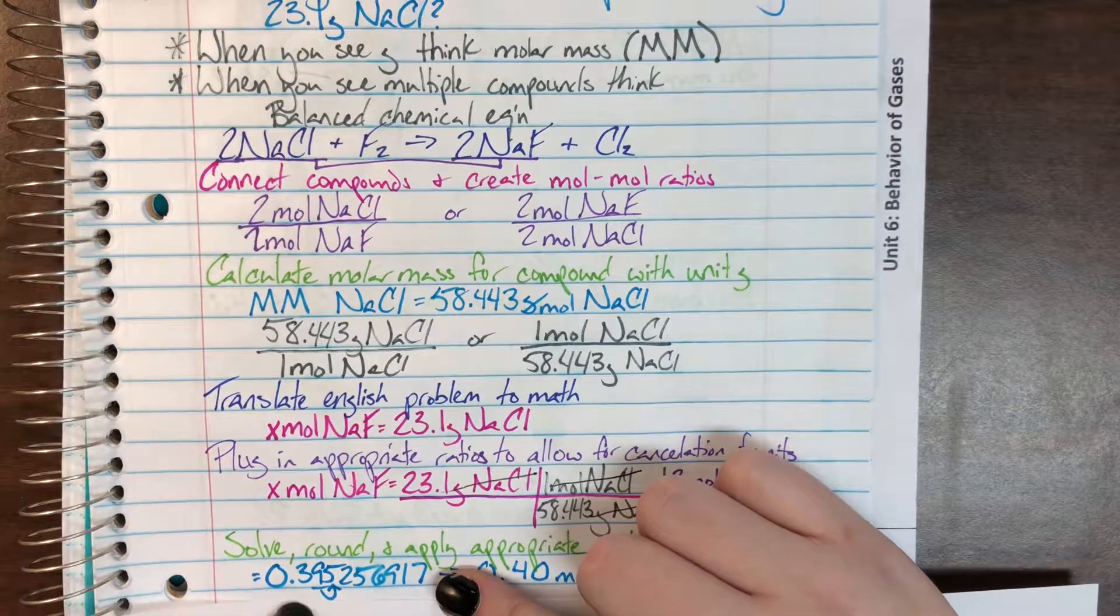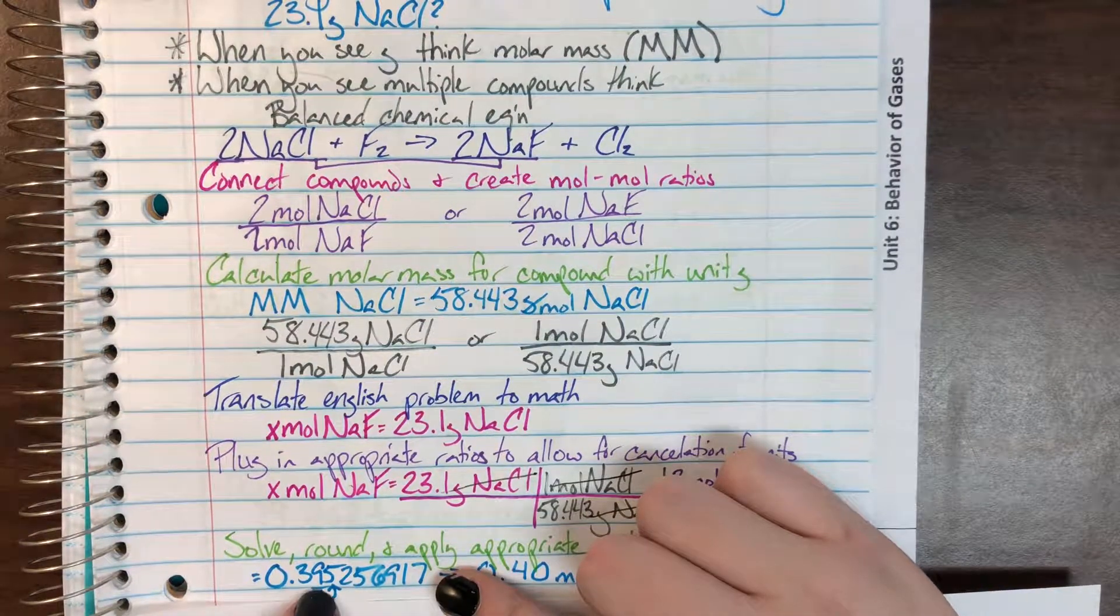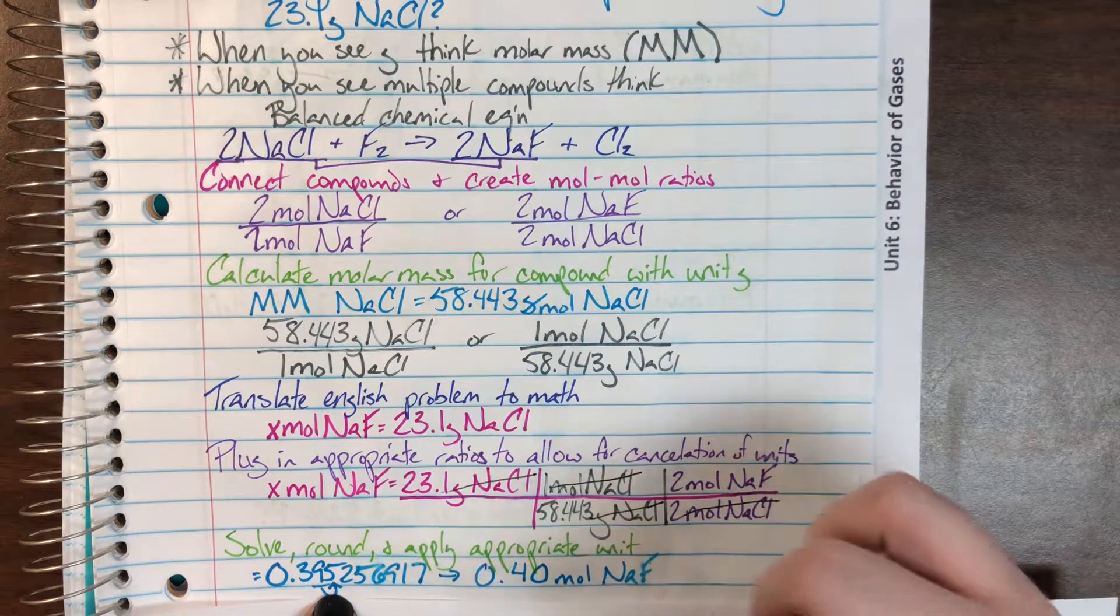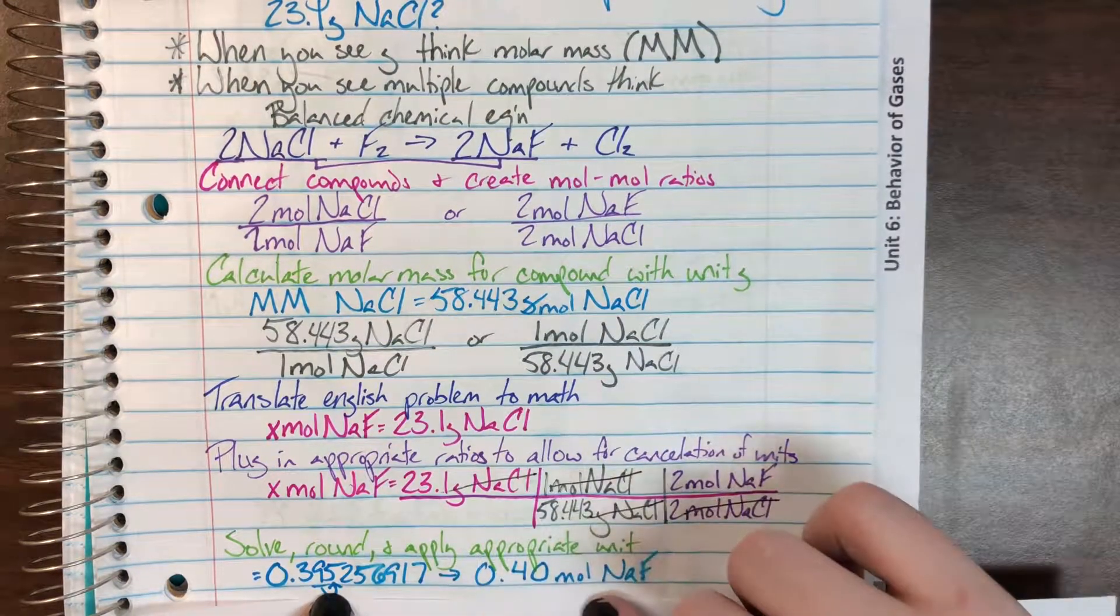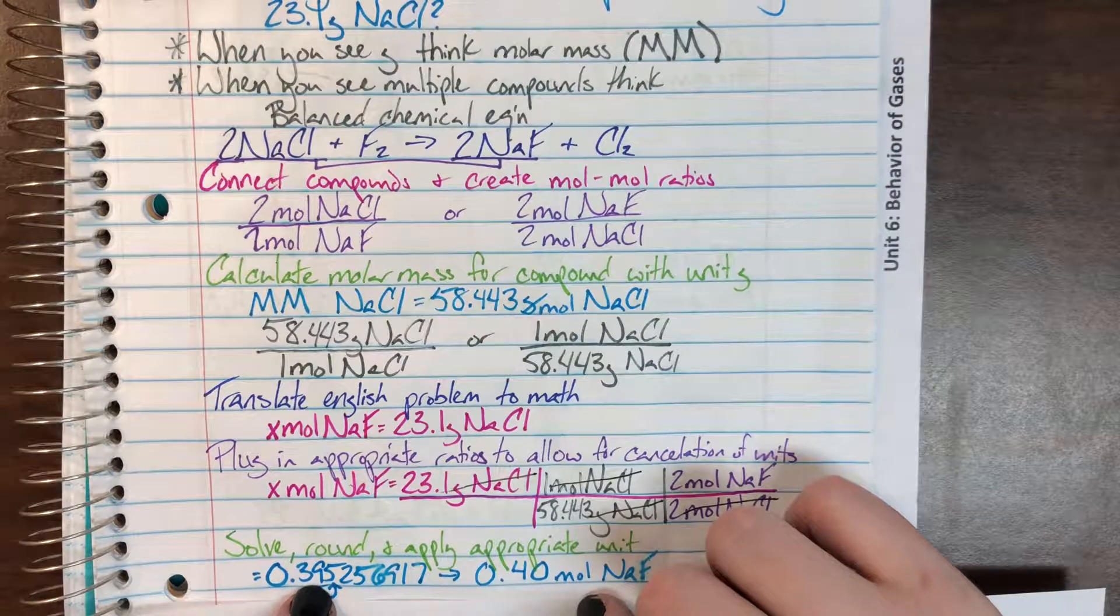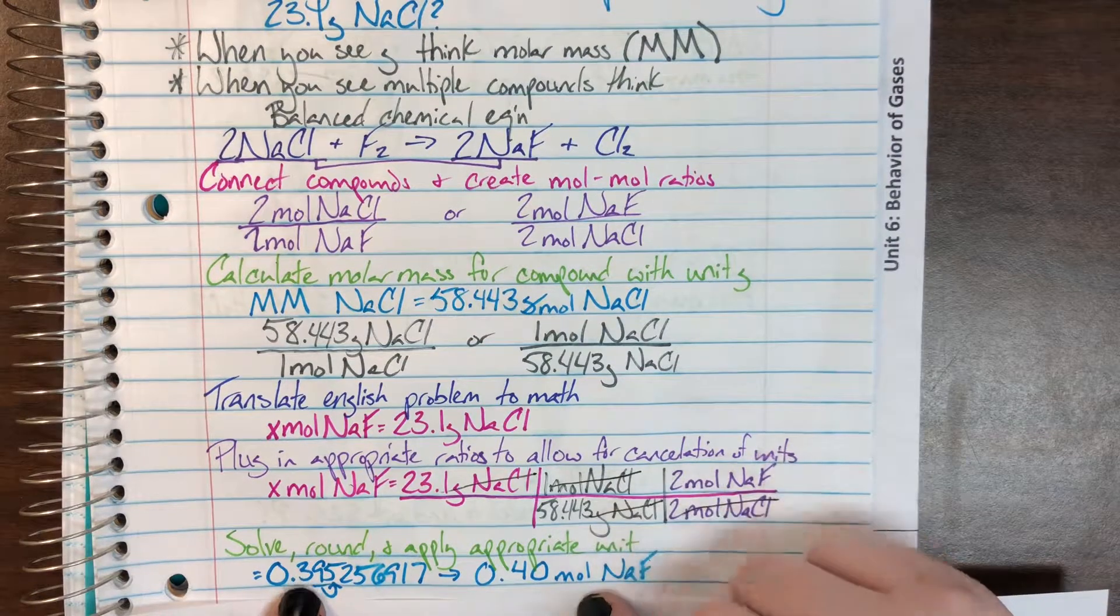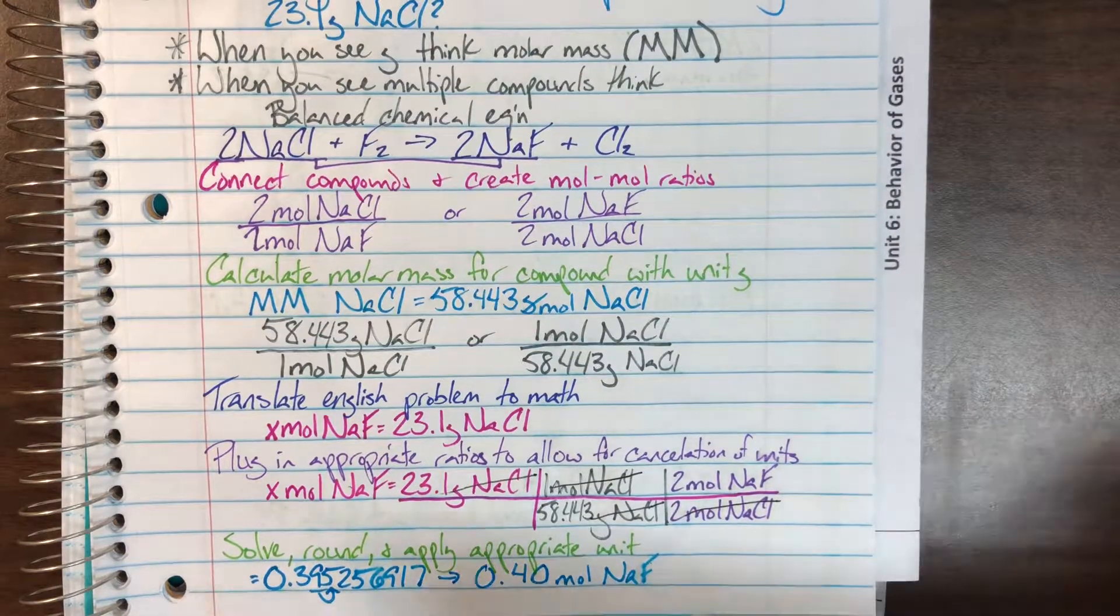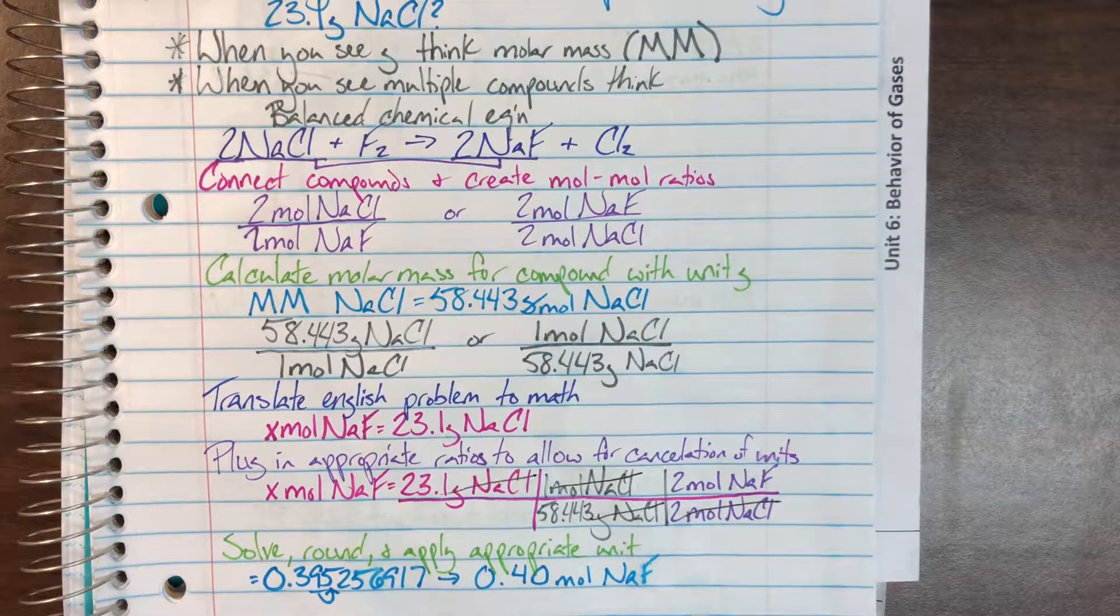I decided I wanted to round to two decimals today. So, that is going to be 1, 2. 9 is the last number I care about. I look over to see if I need to round up. 5 does make me round up. This means that I not only change that 9, I am also going to have to change that 3. This will turn my number into 0.4 moles of sodium fluoride.